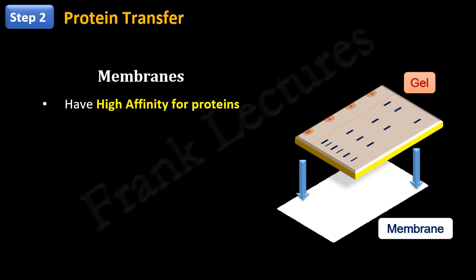Most commonly used membranes in Western blotting are nitrocellulose and polyvinylidene fluoride, abbreviated as PVDF.